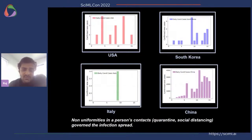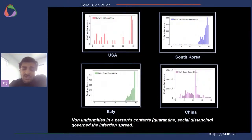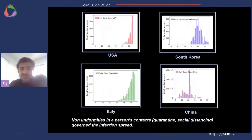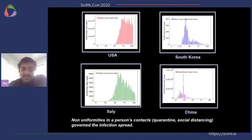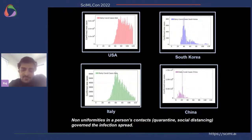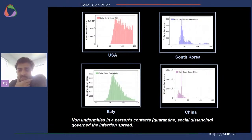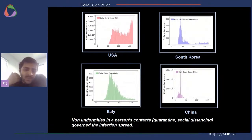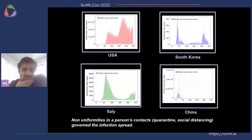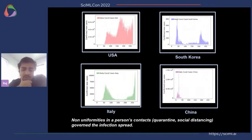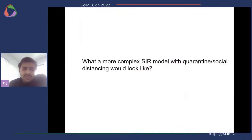During COVID-19 we saw that it's these very non-uniformities that really shape an infection growth curve in a particular country. For example, looking at South Korea's infection data, we can see that due to aggressive quarantining and social distancing measures, infections were curtailed after the first wave. In contrast, the USA graph shows a number of peaks in infected cases because of poor quarantining and social distancing policies. What we really want to do is incorporate these complex effects into the SIR model.